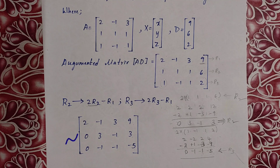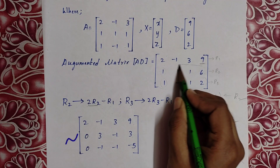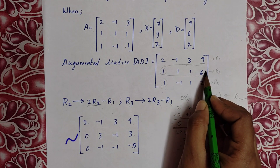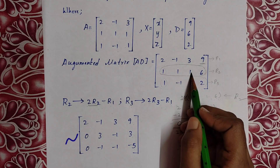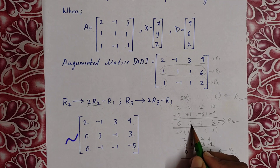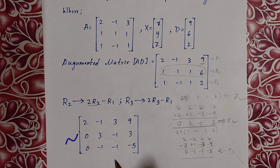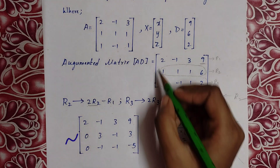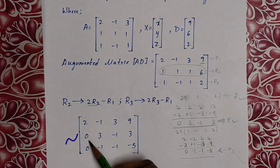R1 values remain unchanged. In R2, the first column entry becomes 0, giving the new R2 as [0, 3, -1 | 3]. The first column second row entry 1 is replaced with 0 after performing the R2 operation.